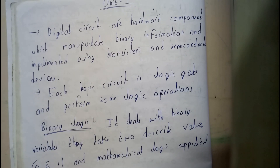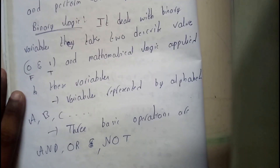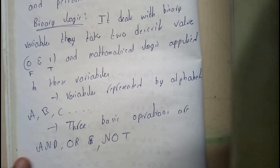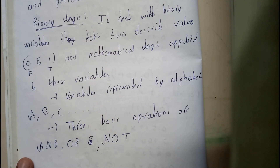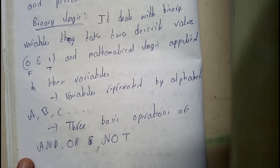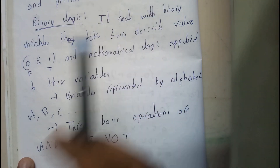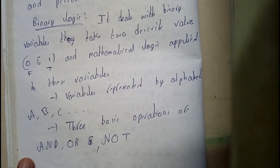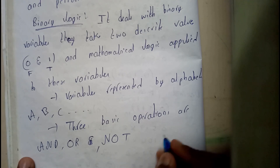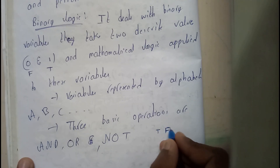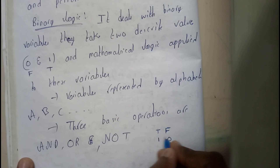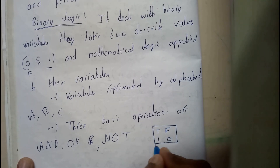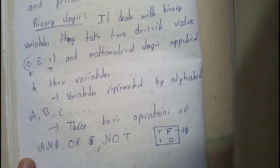Now I hope everyone got a small idea on digital circuits. Let's go through what is binary logic. Every computer knows only binary language, which includes only zeros and ones. I hope everyone has gone through discrete mathematics concepts — in that we use true and false, where true is 1 and false is 0. This is essentially the same concept connecting discrete mathematics and LST.